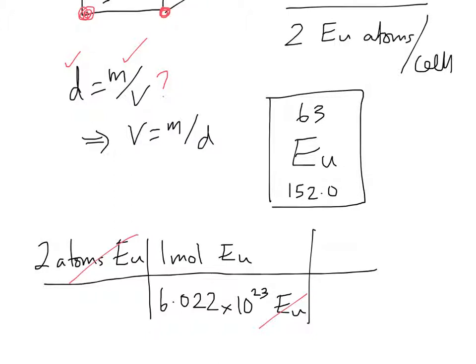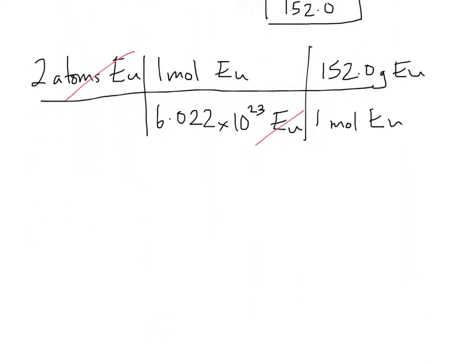And we want to convert moles to grams. Well, we know that 152 is the molar mass. And so one mole of europium atoms would weigh 152 grams. And of course, we're going to get a really tiny number here. So we're dividing by Avogadro's number. That's going to make something incredibly small. And if you do the math, you're ending up with 5.048 times 10 to the negative 22nd of a gram.